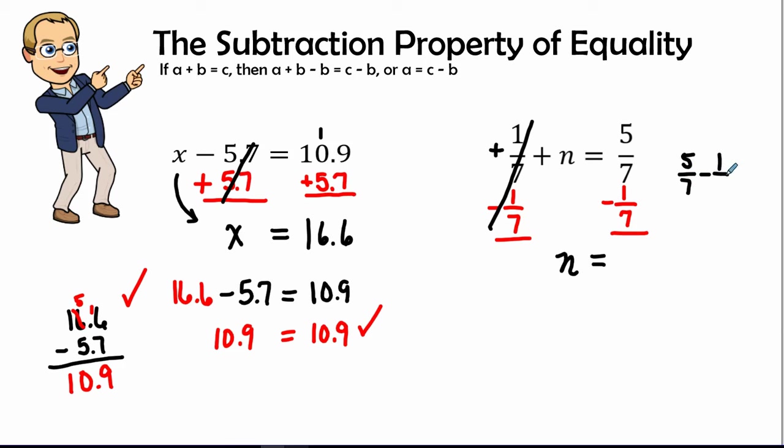So we have 5/7 minus 1/7. We have like denominators, so we keep the denominator the same, and 5 minus 1 is 4. So the variable n equals 4/7.